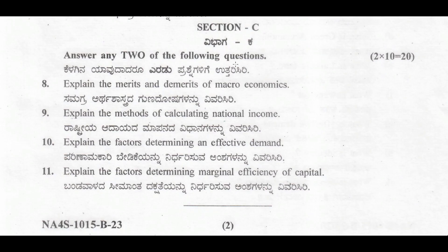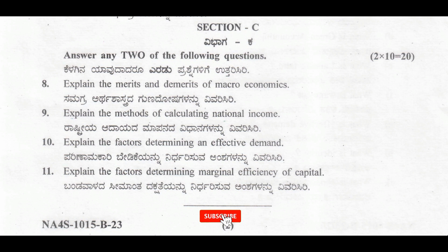The Section C questions include: explain the merits and demerits of microeconomics, explain the methods of calculating national income, explain the factors determining effective demand, and explain the factors determining marginal efficiency of capital. For these 10-mark questions, our answer should be of at least two pages.